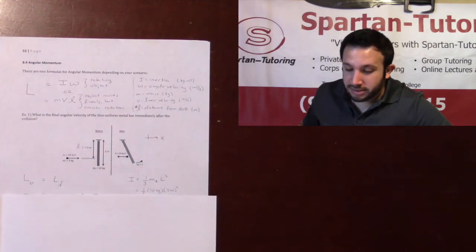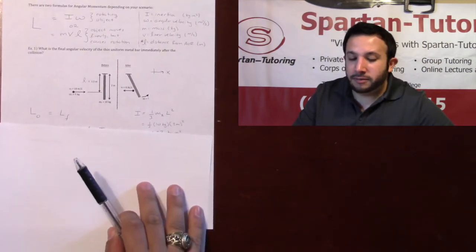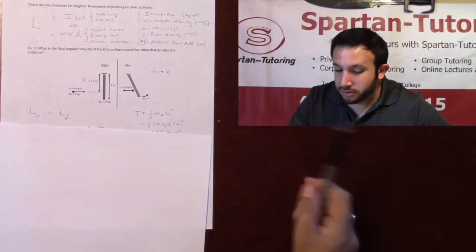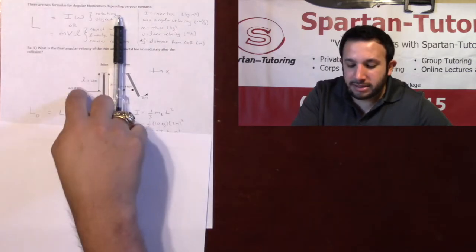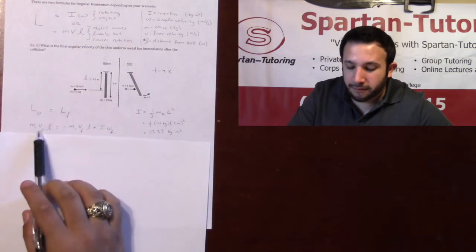Now, in order to set this up, just like before, L-naught is going to be equal to L-f. Just like back with linear momentum, P-naught equals PF, L-naught equals L-f. And so, initially, all the momentum is simply within that baseball. So, you'll have some M1, V-naught, L.